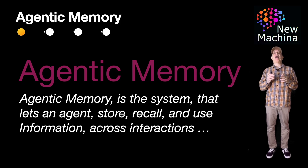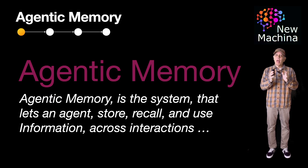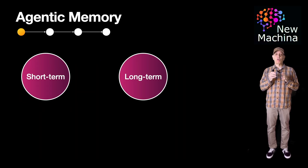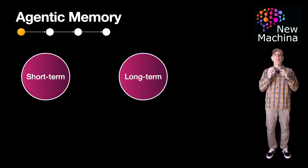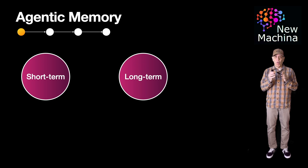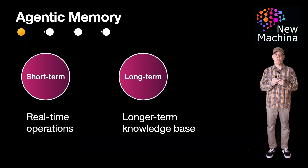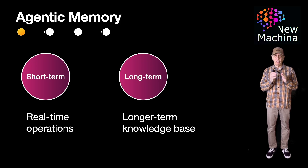So wait a minute, can't the LLM itself remember for the agentic system? Well, not really, but let's come back to this question in a bit. So let's quickly cover the different types of memory used in an agentic system. Agentic systems utilize both short-term and long-term memory to handle immediate tasks and store information over time.